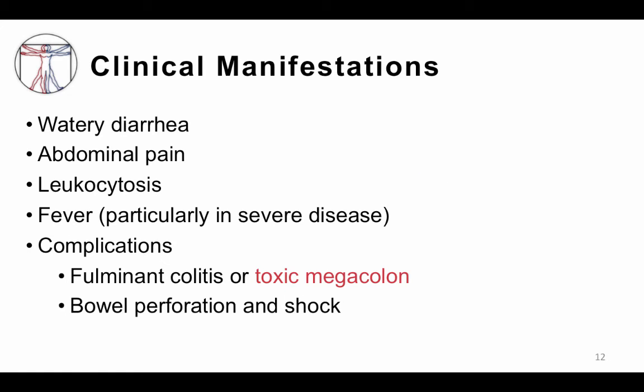The clinical manifestations of C. diff run a spectrum ranging from asymptomatic colonization to watery diarrhea, which would be the most common, to a life-threatening complication called toxic megacolon. Unexplained leukocytosis may reflect brewing C. diff infection in over half of hospitalized patients. Fever is often absent in mild or moderate disease, and the feared complications include fulminant colitis or toxic megacolon. Toxic megacolon is a severe colonic dilation combined with symptoms of systemic toxicity. It may require urgent surgical consultation and can lead to bowel perforation and shock.